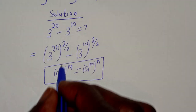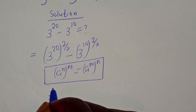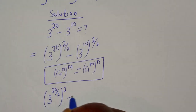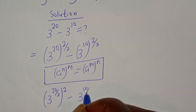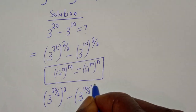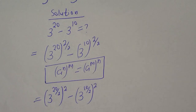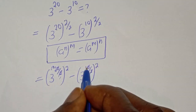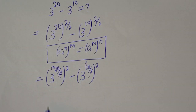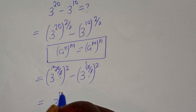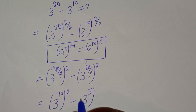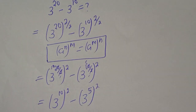So this is t raised to power 20 over 2, squared, minus t raised to power 10 over 2, squared. Simplifying 20 over 2 to 10 and 10 over 2 to 5, this equals t raised to power 10, squared, minus t raised to power 5, squared.